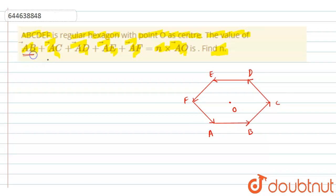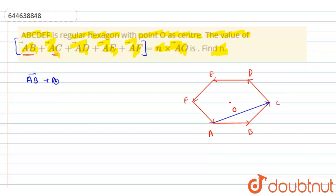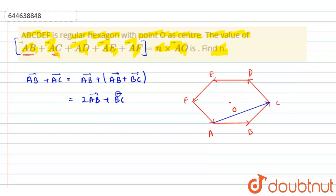Now we have AB vector first. AB vector is in this direction. Next we have AC vector — this is the AC vector. Using the triangle law in triangle ABC, we can write AC vector as AB vector plus BC vector. So AB vector plus AC vector gives us 2 AB vector plus BC vector. Let this be equation 1.